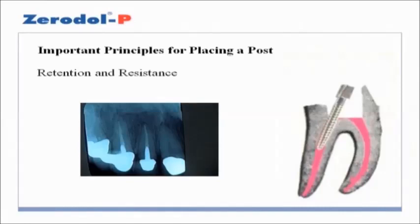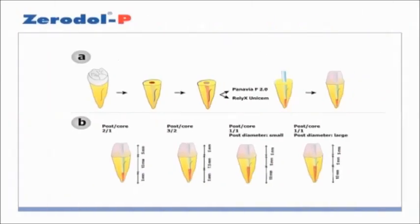Important principles for placing posts. Retention and resistance: post retention refers to the ability of a post to resist vertical dislodging forces. Retention is influenced by the post's length, diameter and taper, the luting cement used, and whether a post is active or passive. Increasing the length and diameter of the post can increase retention.